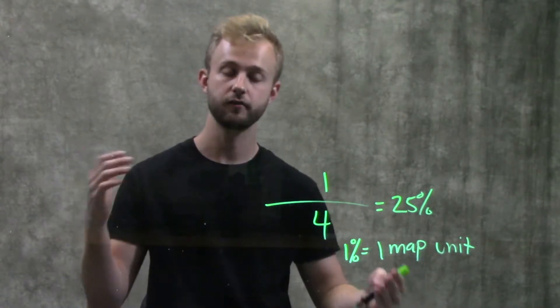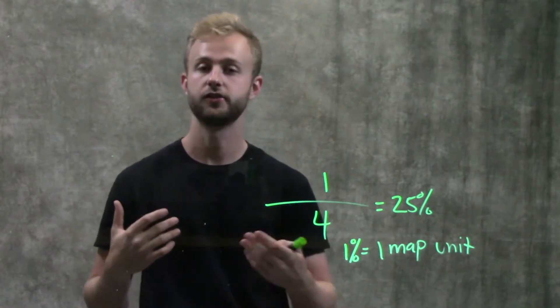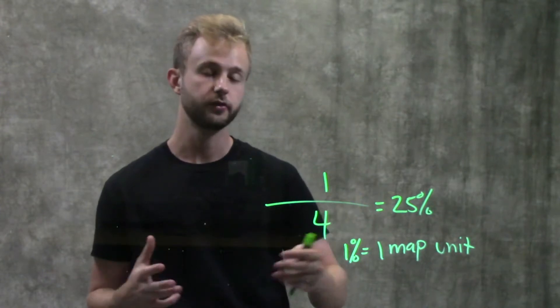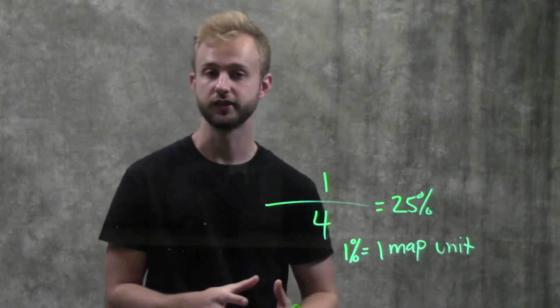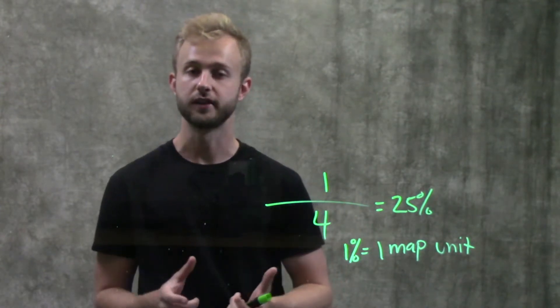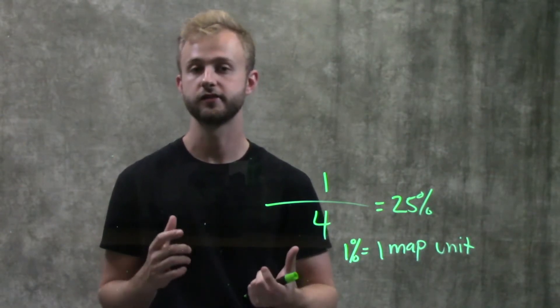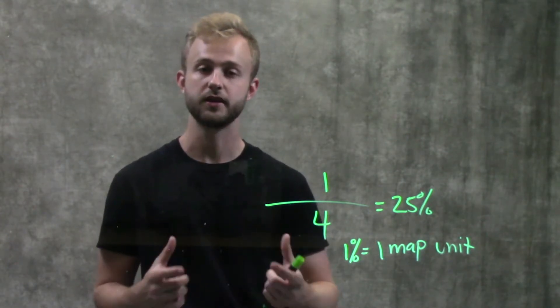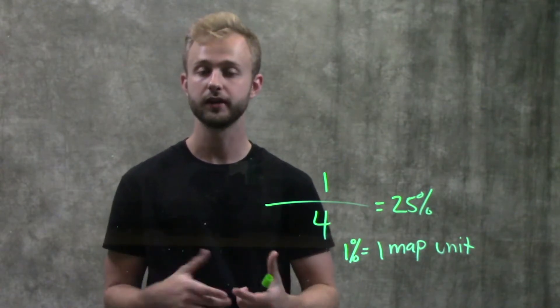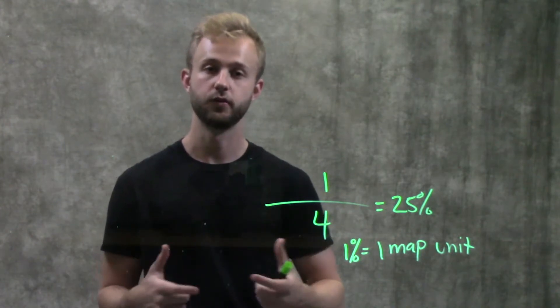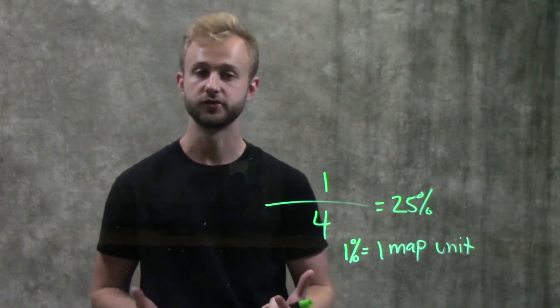The farther apart we get between these two genes, the higher the chance of recombination. Recombination frequencies will only go up to 50% because at 50%, the genes, even though they are on the same chromosome, they're considered genetically unlinked because crossing over would happen so frequently that they would segregate independently of one another, just like they would if they were on two separate chromosomes.